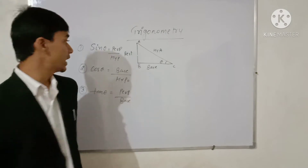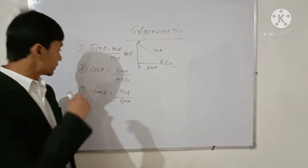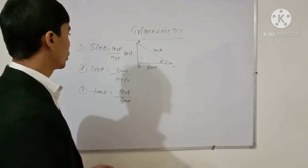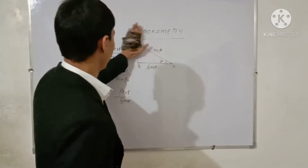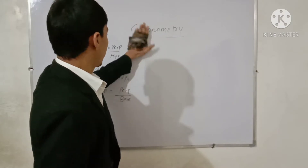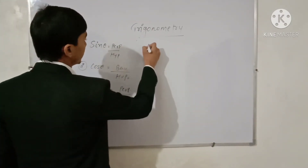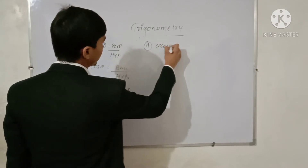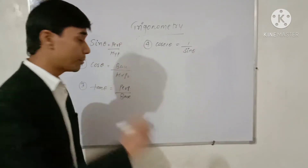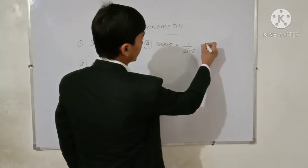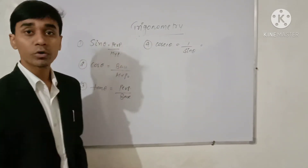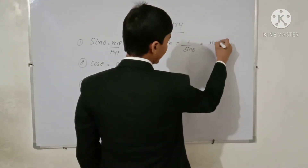Three more Trigonometric ratios also exist, but these are derived from the first three. The next ratio is cosec theta, which is defined as the reciprocal of sin theta. Since sin theta equals perpendicular upon hypotenuse, cosec theta equals 1 upon sin theta, which is hypotenuse upon perpendicular.